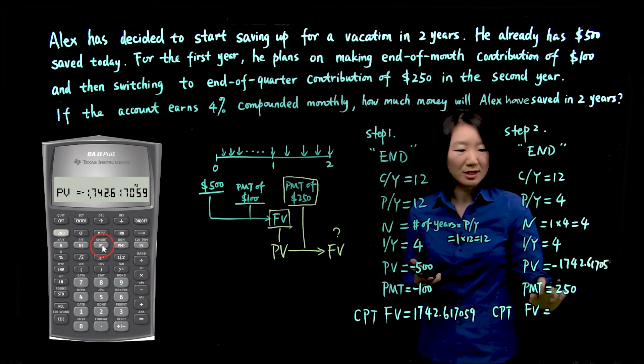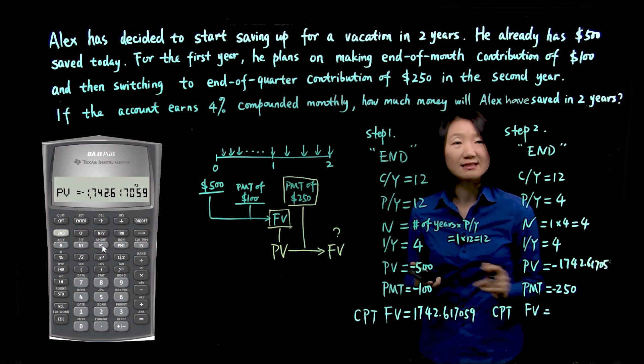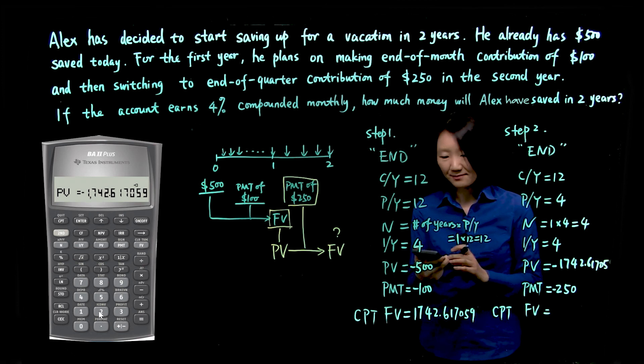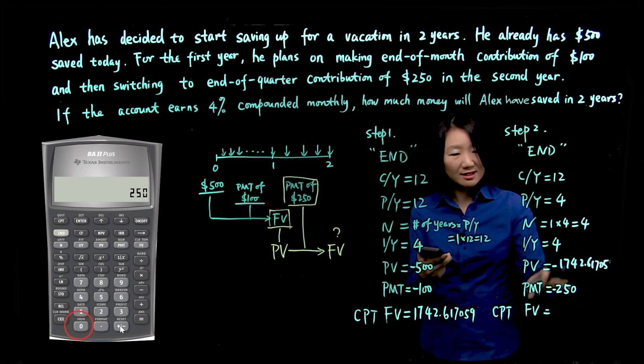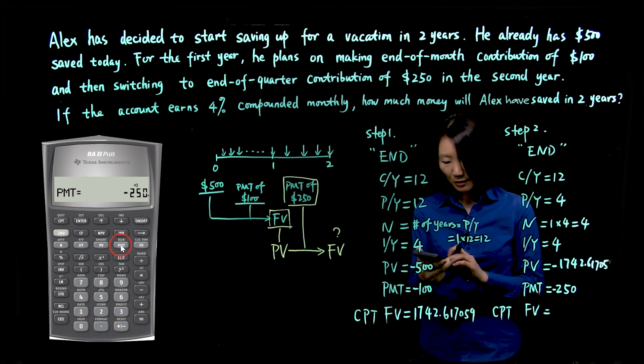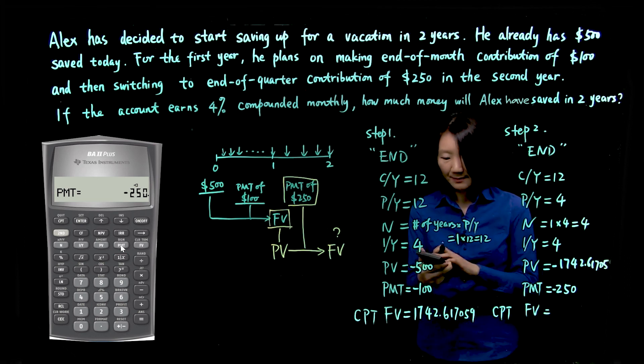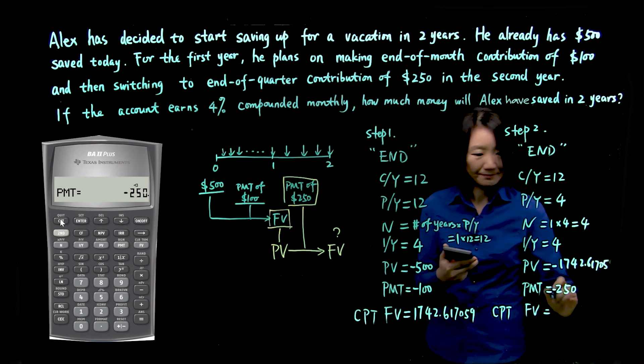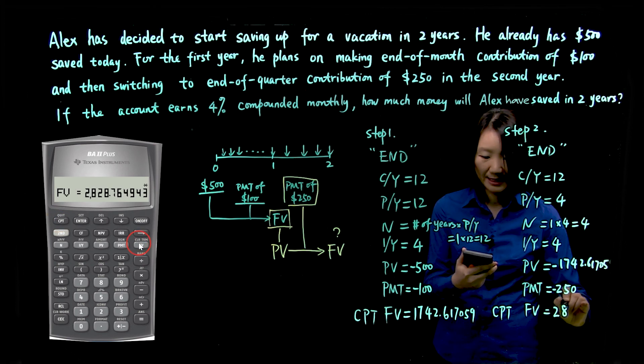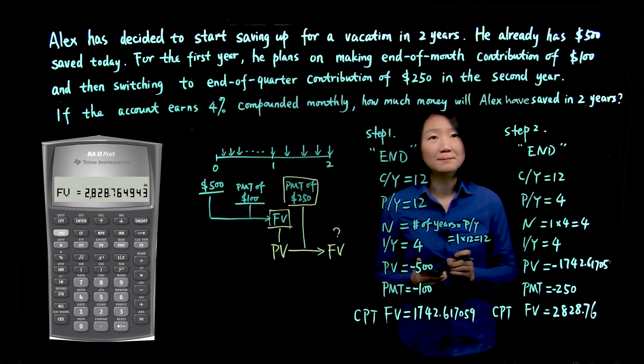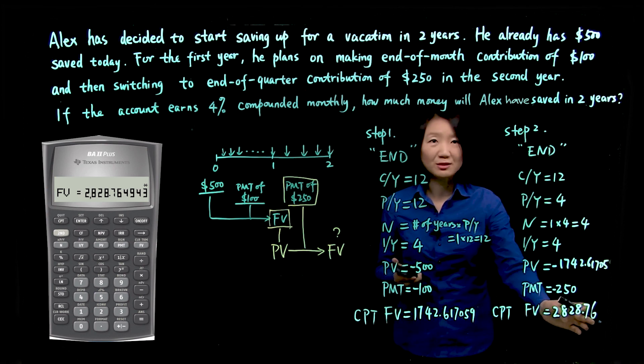And if you do use PV as negative, make sure your PMT also entered as negative, because again, that's your constant end of quarter contribution. So let's make PV negative, and PMT also negative. 250 negative PMT. And let's compute for future value. It's 2828.76. Notice now I rounded to two decimals, because we're talking about money. So it only makes sense to be accurate up to cents.